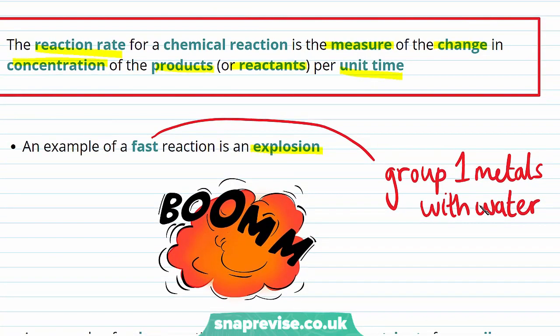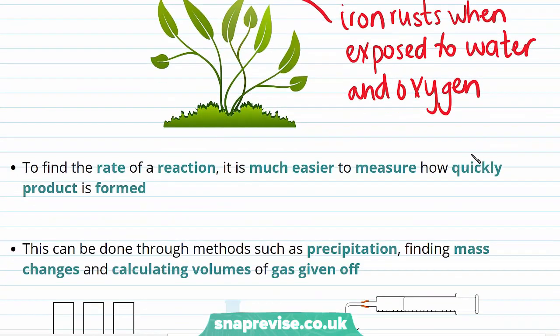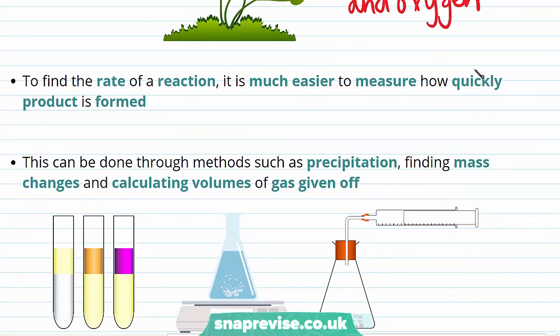In our definition, we said that the reaction rate for a chemical reaction is a measure of the change of concentration of the products or reactants per unit time. But in reality, when finding the rate of reaction, it's often much easier to measure how quickly the product is formed. This is because it's easier to observe a change rather than how quickly something is disappearing.